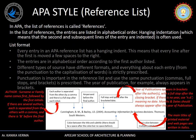To generate a reference list in APA style: every entry has a hanging indent, meaning every line after the first is moved a few spaces to the right. Entries are always placed in alphabetical order according to the first author listed. Different types of sources have different formats, and everything — from punctuation to capitalization of words — is strictly prescribed. Punctuation such as commas, full stops, and brackets is highly important.